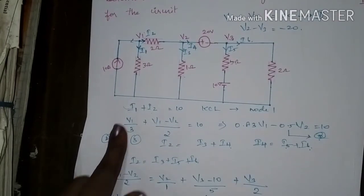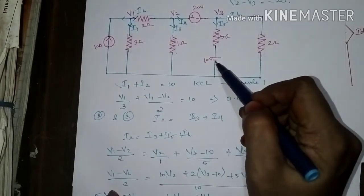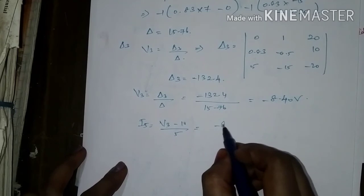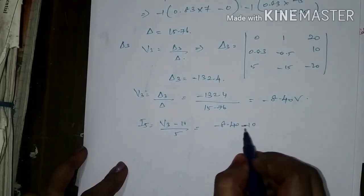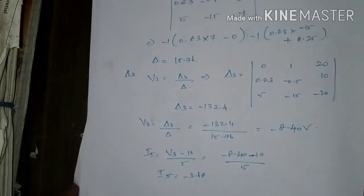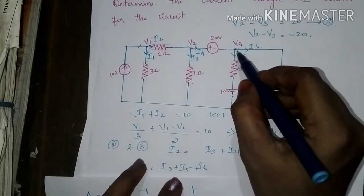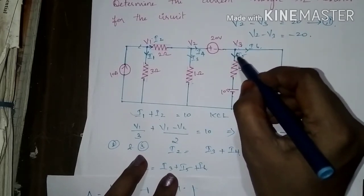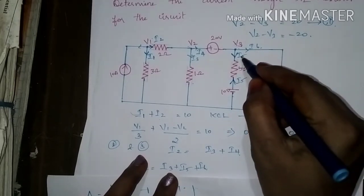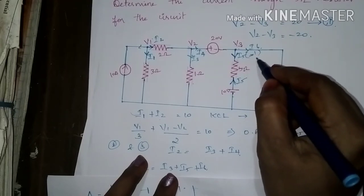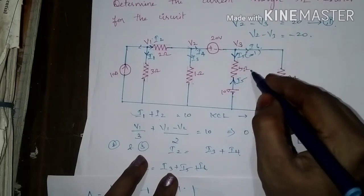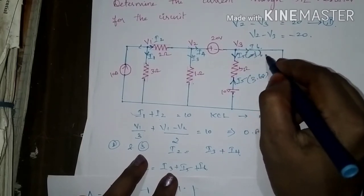Current I5 can be written as V3 minus 10 divided by 5. Substituting V3 equals minus 8.4: I5 equals minus 8.4 minus 10 divided by 5, giving I5 equals minus 3.68 amperes. The negative sign shows that the assumed current direction is wrong. We had assumed the current was leaving the node, but actually I5 is entering the third node from the battery. So I5 is 3.68 A entering the node.